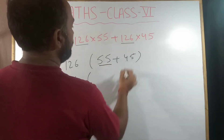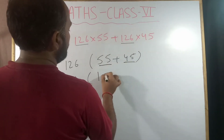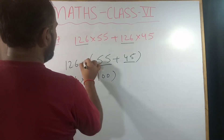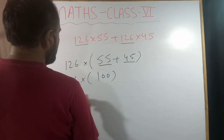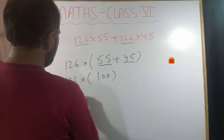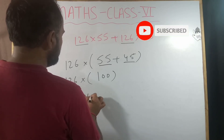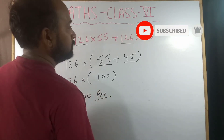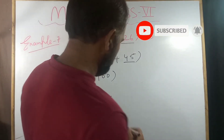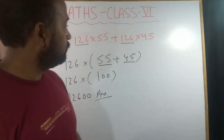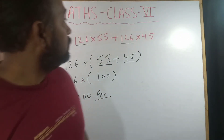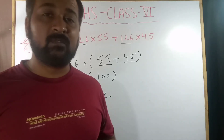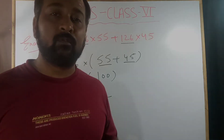Now add 55 and 45, which gives 100, and this is in multiplication. So we have 126 times 100, which equals 12600. This is the answer. This way we have completed example seven. In the next video we will meet with a new example.